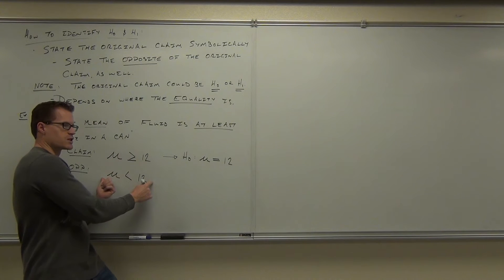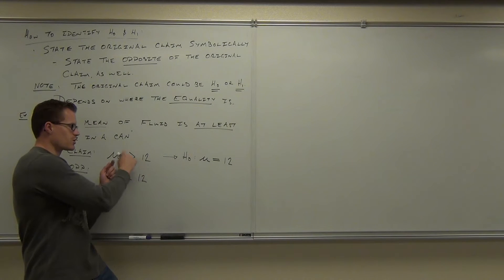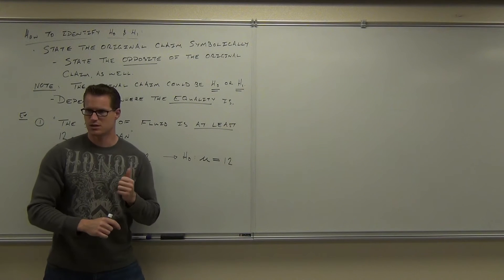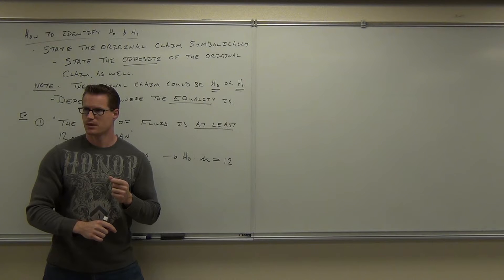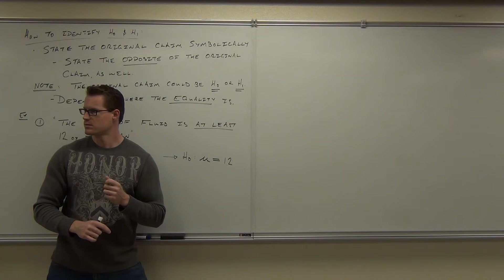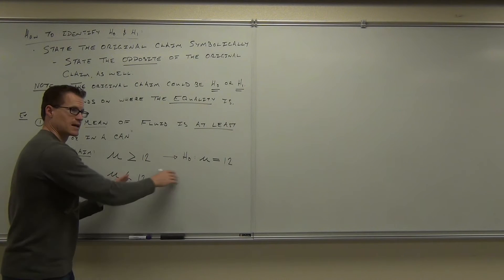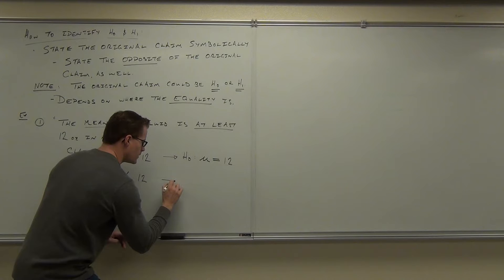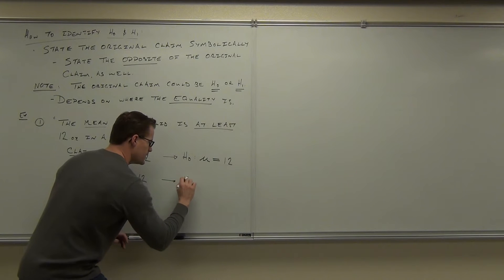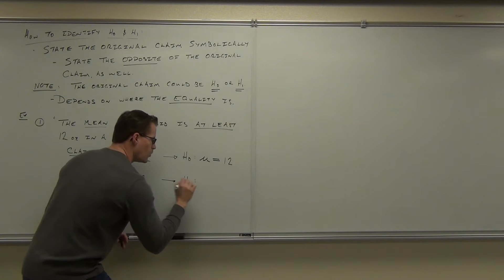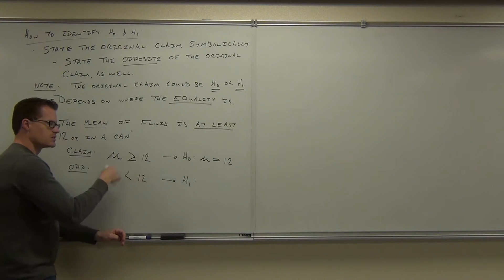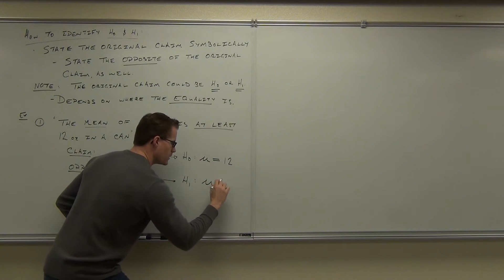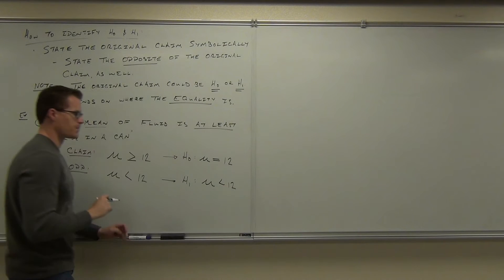Identify your claim and your opposite. Whatever your equals is, just write equals. The other one, you leave it exactly like it is. In this case, H sub one has no equals — we write mu less than 12.